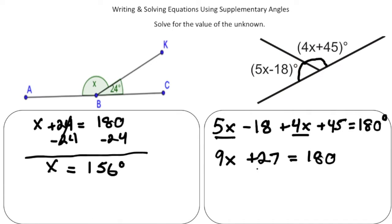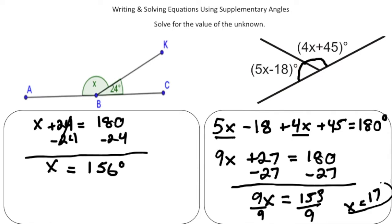Now it's just a two-step equation. Take away 27 from both sides and we get 9x = 153. Then when I divide both sides by 9, we get our solution of x = 17.